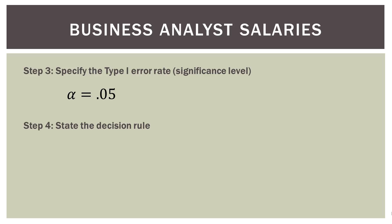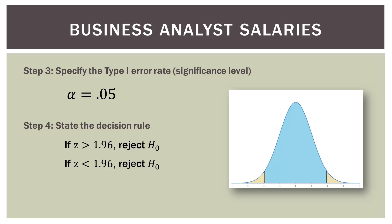Step four: state our decision rule. Based on the curve, if our Z value is above 1.96, it'll be in our top rejection region and we'll reject the null hypothesis. If our Z statistic is less than negative 1.96, we will also reject the null hypothesis, because that will be in our lower rejection region.